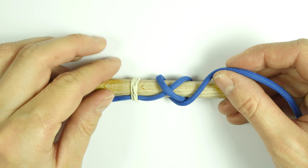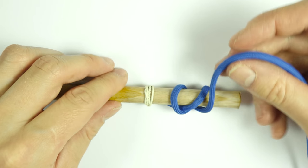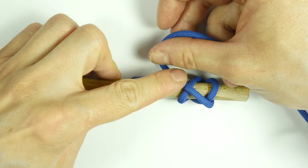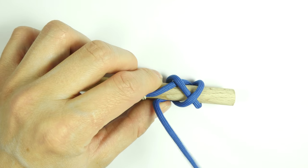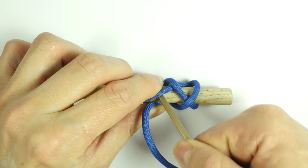Then, from right to left, pass over two, so over these two parts, and under the standing end.